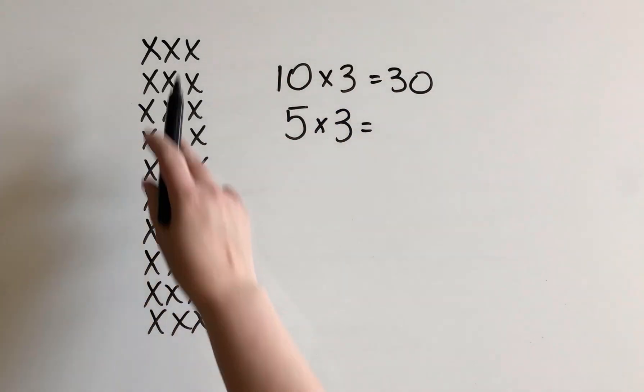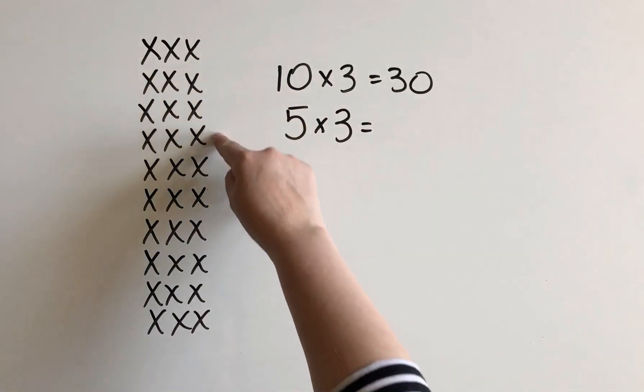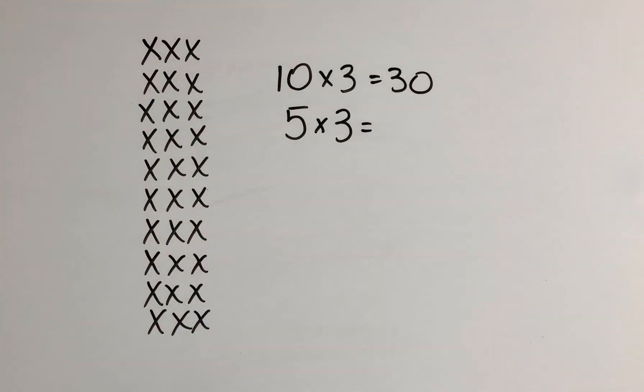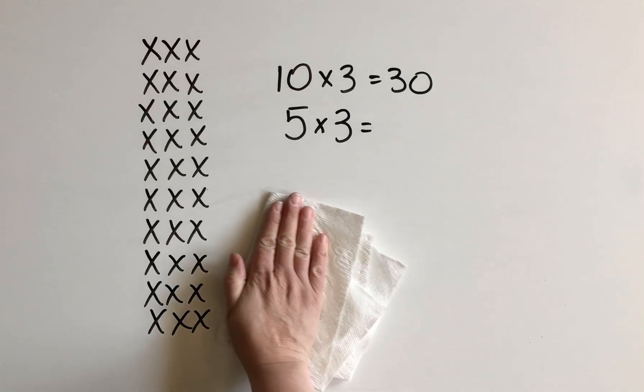And I've shown that over here, we can see 10 groups of 3. So imagine that these are rows of chairs, and you have 10 rows with 3 chairs in each row. Now if I want to multiply 5 times 3, all I'm doing is I'm taking away half of those rows, aren't I?